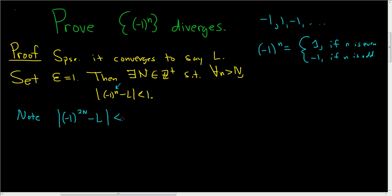This has to be less than 1. And the reason is that 2n is bigger than N, right? We know that 2n is bigger than N. (-1)^(2n), well, 2n is even, so this is |1 - L| < 1.